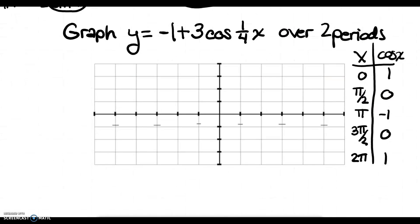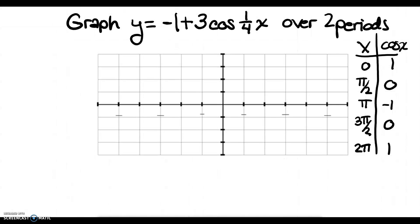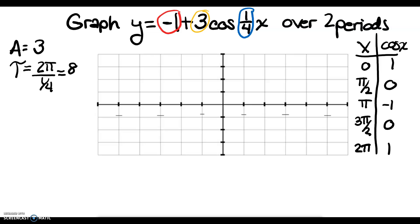Now for our most complicated example. We identify all pieces: amplitude is the absolute value of 3, which is 3. The b value is 1/4, so the period is 2π divided by 1/4, which equals 8π. The vertical shift is negative 1, so we're going down by 1 — I mark that on the graph as the new resting position.